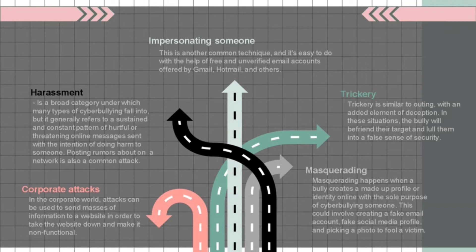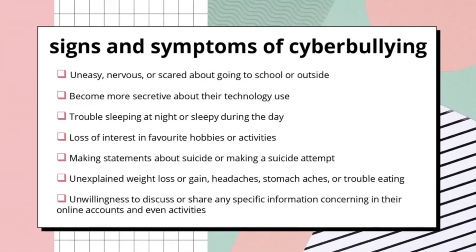Signs of cyberbullying: first, uneasiness, nervousness, or fear about going to school or outside. This is a major warning sign that a child is uncomfortable in their school environment. Other signs include a child continuously asking to skip school by staying home, or asking to come home early during the school day. Second, they become more secretive about their technology use — such as leaving the room to use their phone or exiting out of tabs when you walk by.